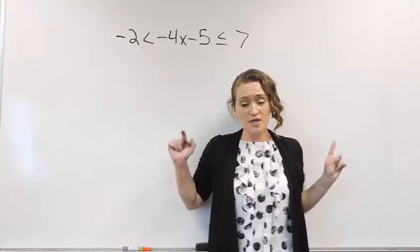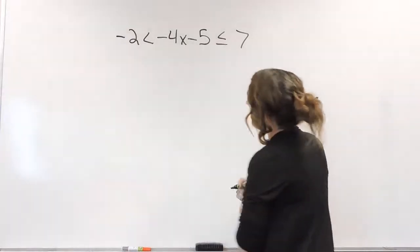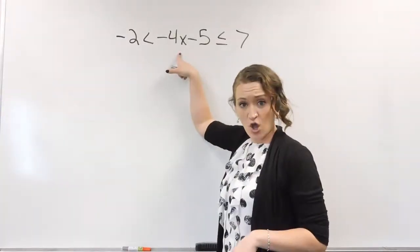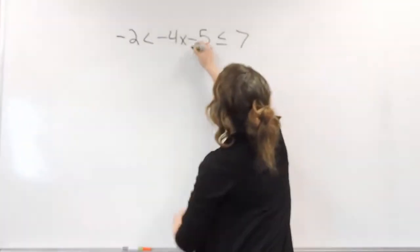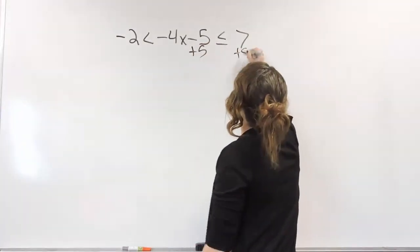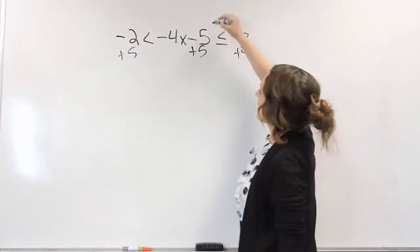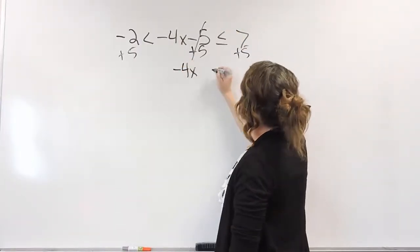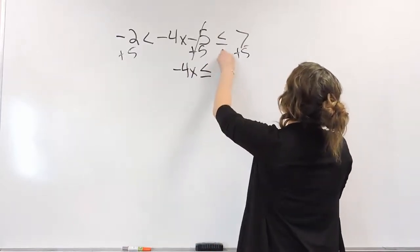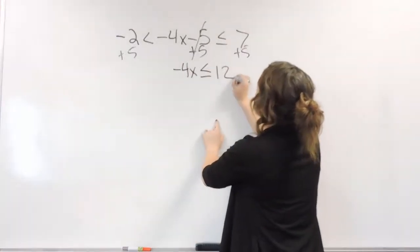So let's solve another three-part inequality here. So we're working on getting x all by itself, so we need to get rid of everything else. So here we have a minus 5. So let's add that 5 to all sides. Negative 5 plus 5 cancels. Let me drop down the negative 4x. Less than or equal to 7 plus 5 is 12.